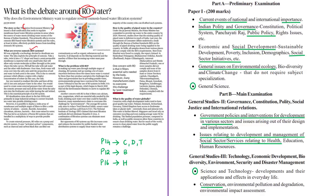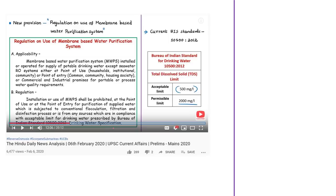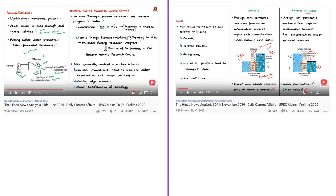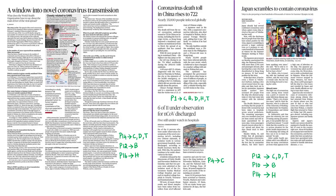Previously on 6th February, the Hindu news analysis discussed this notification and RO systems, and also in June 4th and November 7th news analysis videos, covering the functioning of RO systems, the problems associated with them, and the reasons behind the prohibition suggested by the Union Environment Ministry in the recent draft notification. Viewers are requested to view those videos for better understanding.